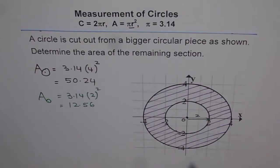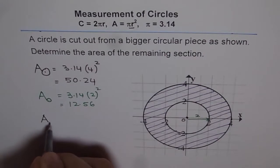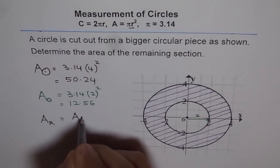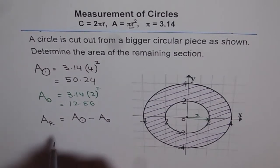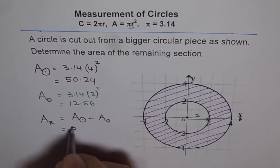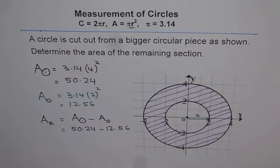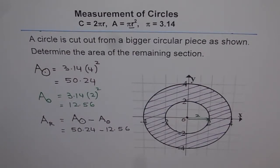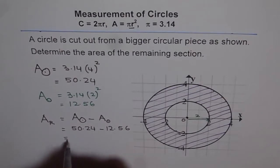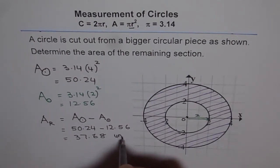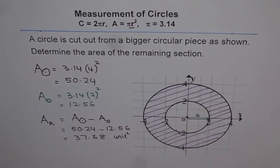Now what is the area of the remaining section? The area of the remaining section is the difference of these two: area of big circle take away area of small circle. So that gives us 50.24 take away 12.56, which equals 37.68. If units are not given you can write unit square. So the area of the remaining section is 37.68 unit square.